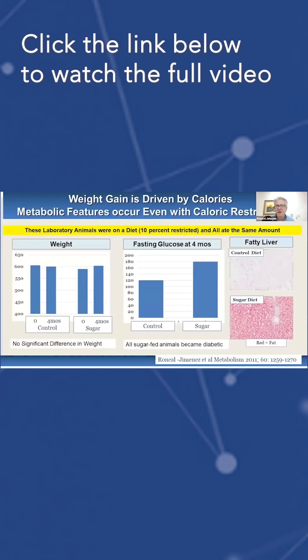For example, this is a study we did where we calorically restricted rats. These are laboratory rats. They're normally eating a certain amount of food. We actually reduced their food intake, but one group had a high sugar content and the other did not.